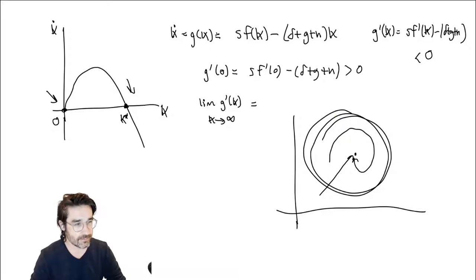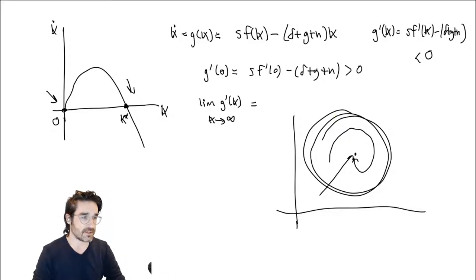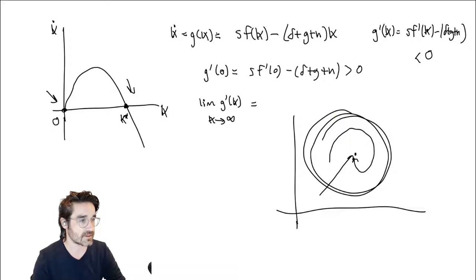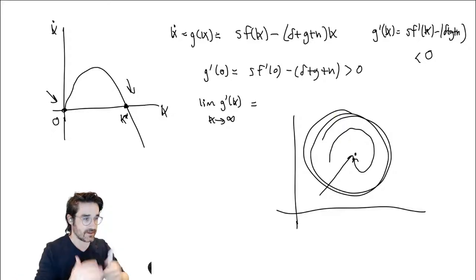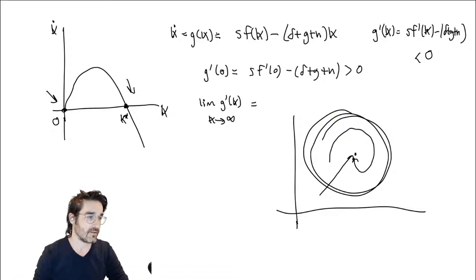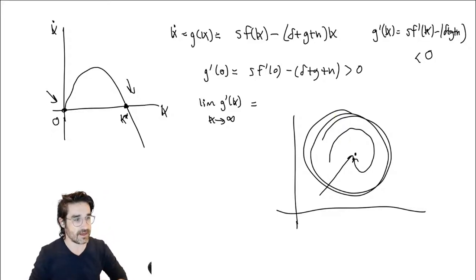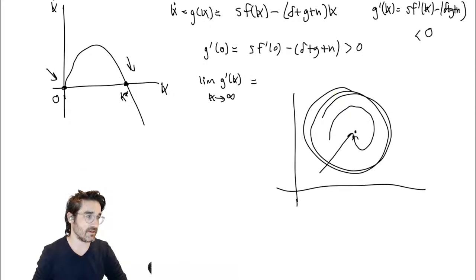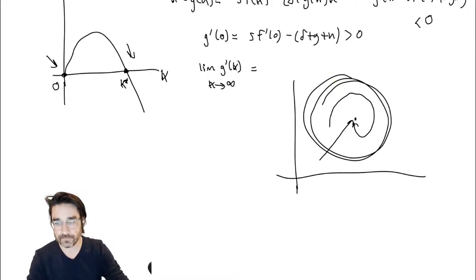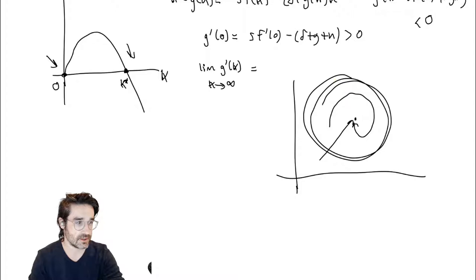We won't really see orbiting and cycles because almost everything we do kills off oscillations. Unless you're explicitly driving a system with oscillations, rational expectations will say: if I know it's going to overshoot, I'll adjust now and dampen everything. So in these types of models you end up just converging in an orderly manner. It's possible, but we end up making assumptions that generally rule that out.